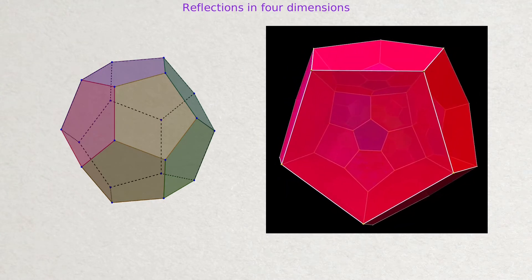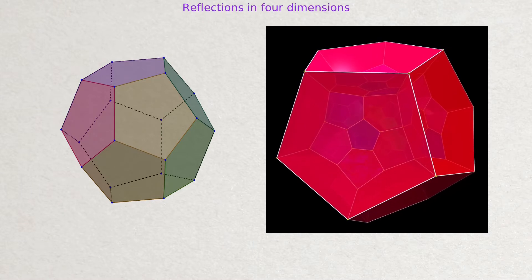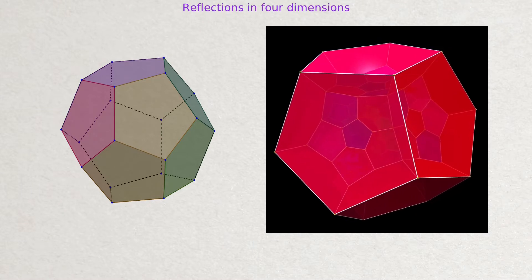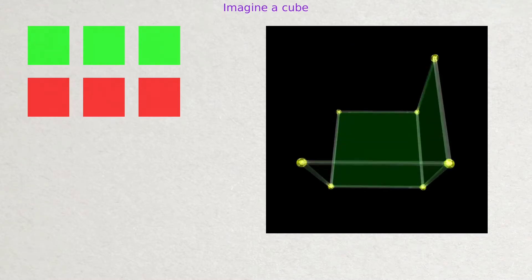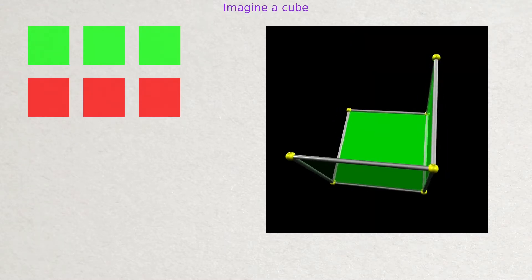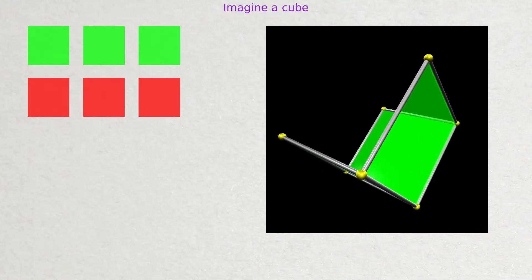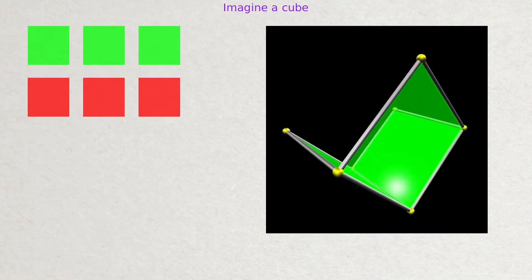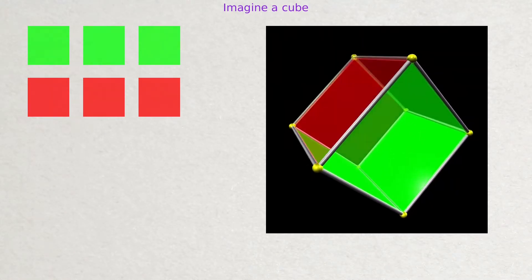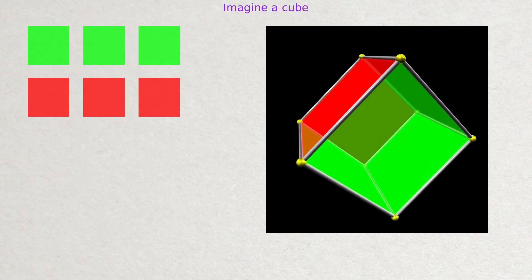How much can be understood when we talk about four-dimensional objects? Let's step back to three dimensions first and try to imagine a cube. What do you see? Can you see six squares? Do you know that at each corner three squares touch each other perpendicular? Do you see that opposite faces are parallel? It's easy, isn't it?